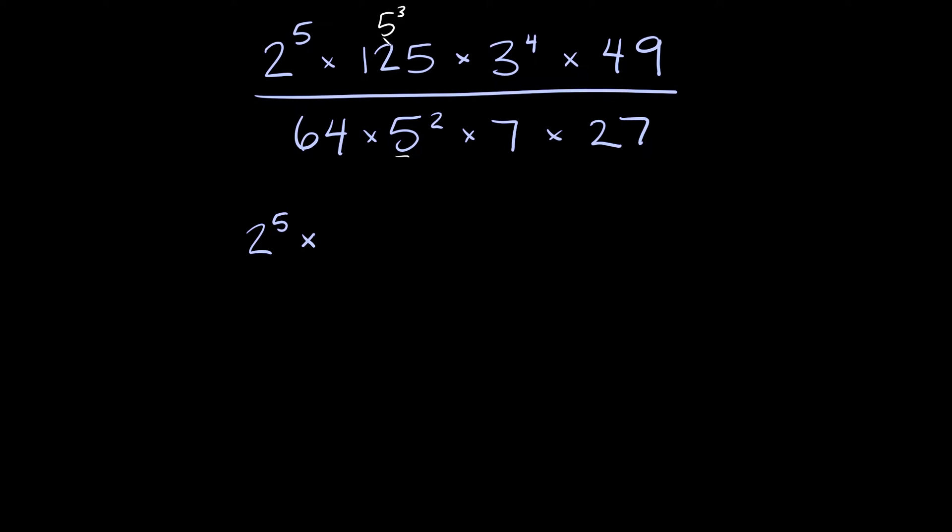You want to look out for the bases specifically. There's a 5, we can turn this into a 5 because there's already a 5 down here and then we can cancel stuff out that way.